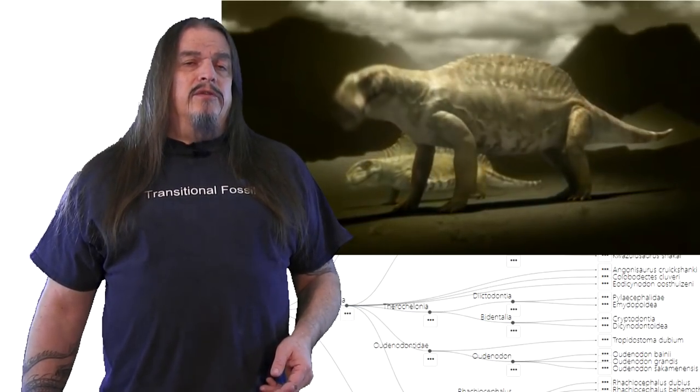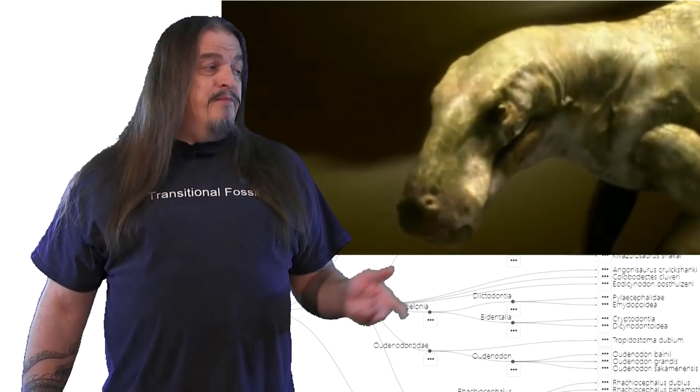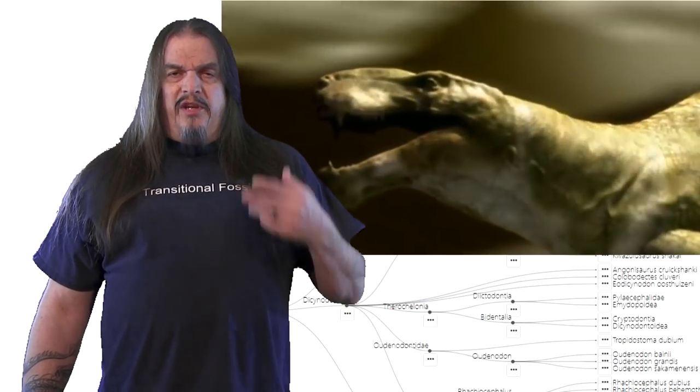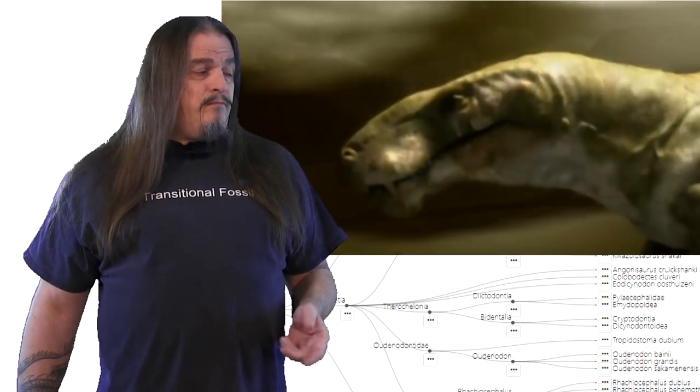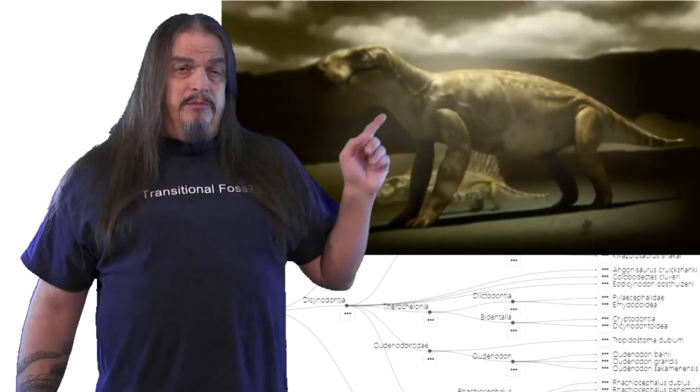This first indication of endothermia was immediately followed by a suite of others in the next lineage that we look at, theriodonts, which means they have mammal-like teeth. If you've only ever seen one species out of all these things before, it was probably this one.